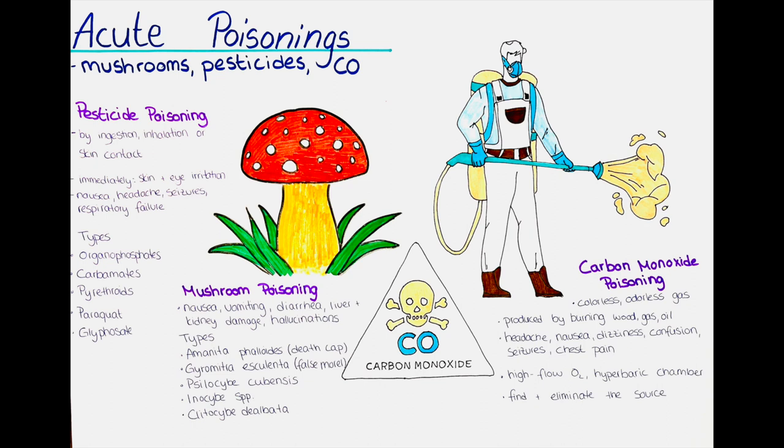Some of the types of pesticides that can lead to intoxication include organophosphates. These pesticides are commonly used in agriculture and can cause acute poisoning through inhalation, ingestion or skin absorption. Symptoms of organophosphate poisoning include nausea, vomiting, diarrhea, headaches, seizures and respiratory failure.